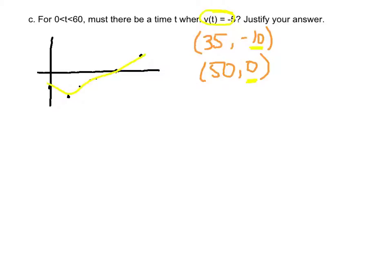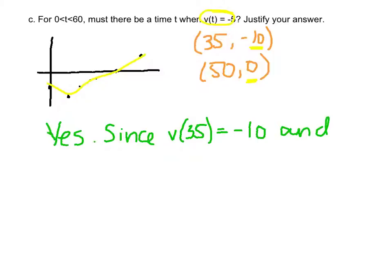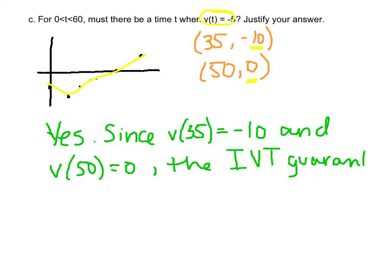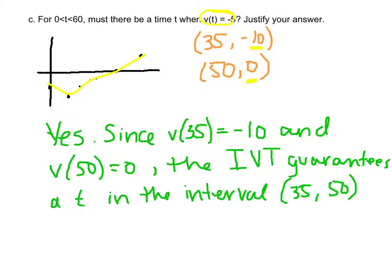So the way to write this for the AP test is: yes, since v of 35 equals negative 10 and v of 50 equals 0, the Intermediate Value Theorem guarantees a t in the interval from 35 to 50 such that v of t equals negative 5.